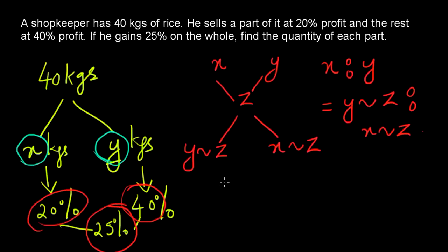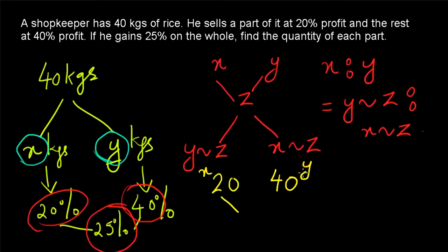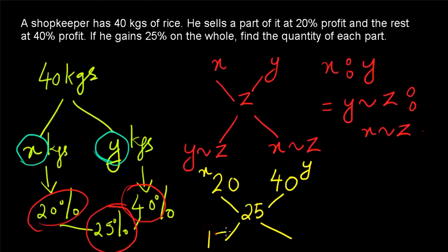We can use the same rule here. One part is sold at 20% profit — this is X. The second part is sold at 40% profit — this is Y. The overall profit is 25%. So the proportion of X to Y is given as: the difference between 25 and 40 is 15, and the difference between 20 and 25 is 5. Therefore, X to Y is 3 to 1.